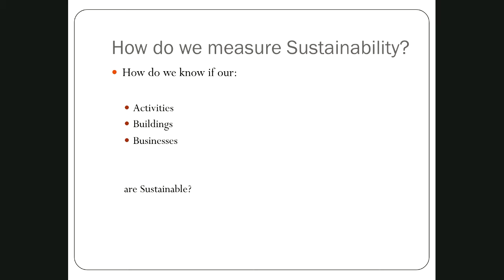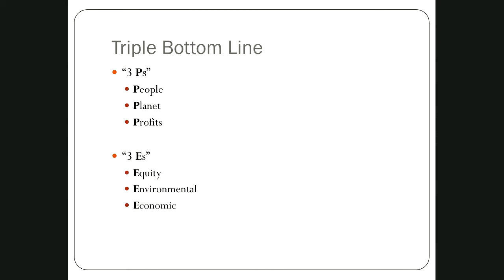How do we measure this? How do we know if our buildings or businesses are sustainable? As we move through the semester, we'll find a couple of different systems to measure sustainability. One way that folks have used is what's called the triple bottom line. You're probably familiar with the bottom line in a business context — the bottom line is how much profit, how much money did a company make in a given year or a given period of time.